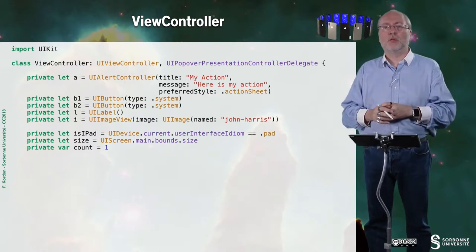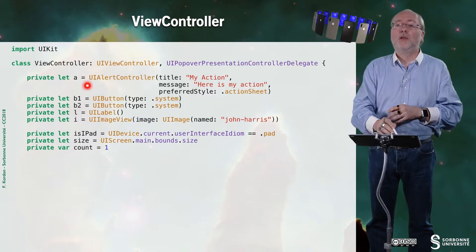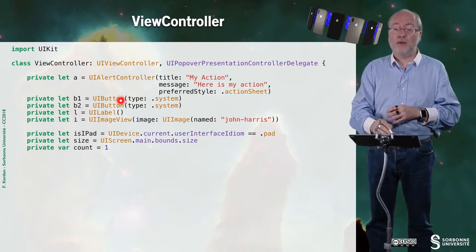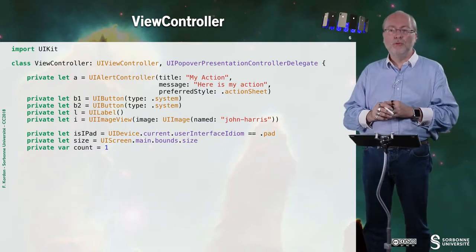So, let's have a look on the source code. So, here, I have several variables. The UI alert controller. I have two buttons. I have a UI label, a UI image view.